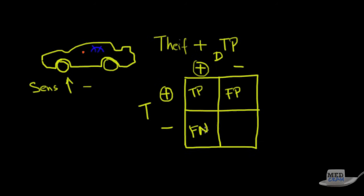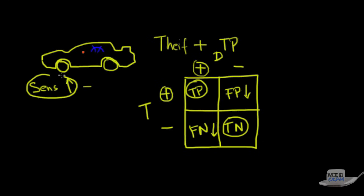A false negative is probably the worst result. You go out to the parking lot and the car is gone — the alarm never went off and didn't disengage the engine. And finally, the thing that happens all the time is a true negative: the car alarm is not going off and your car is not being broken into. We like true positives and true negatives, and we want to minimize false positives and false negatives as much as possible.